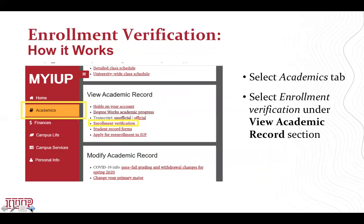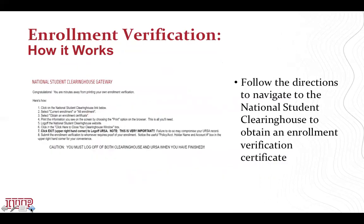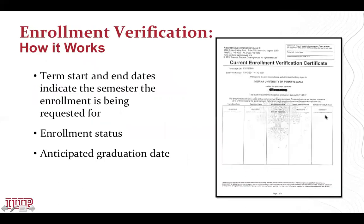To access an enrollment verification, navigate to the Academics tab of your myIUP account. Select Enrollment Verification under the View Academic Records section. Follow the directions to navigate to the National Student Clearinghouse to obtain an Enrollment Verification Certificate. The certificate shows term start and term end dates for the semester and the enrollment status for that period of time. The enrollment status appears in the middle, and the anticipated graduation date is also on this certificate — it's a computer-generated date, five years from the date of enrollment.